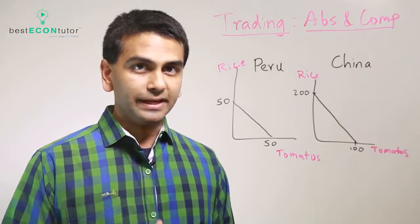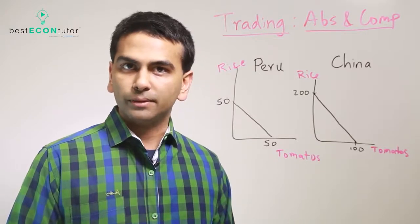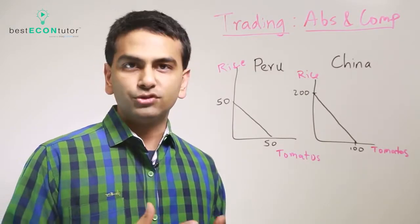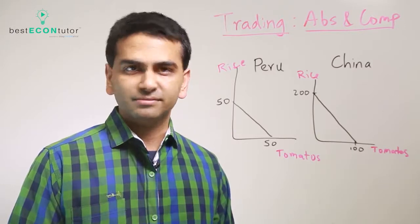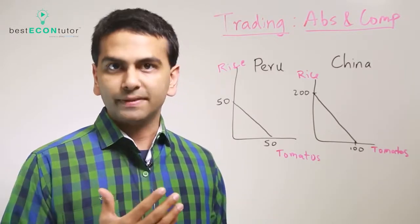Now absolute advantage is simply saying who can make more of that good per worker. Let's assume for this problem that Peru and China have the same number of workers. If they didn't, you'd just have to divide how much they can make totally by the number of workers.